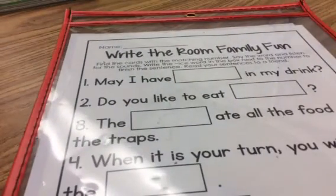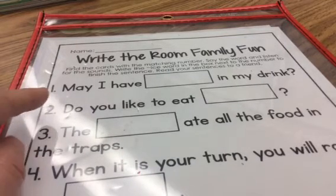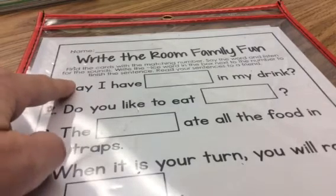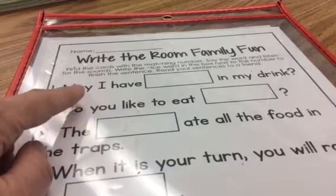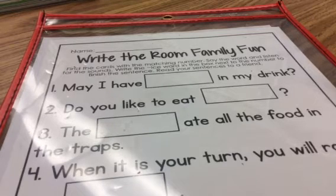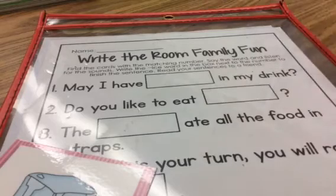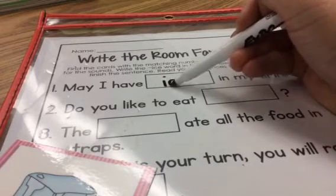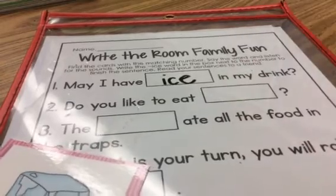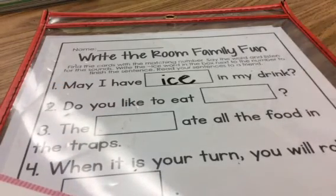Let's turn our paper over and see if we can figure out where these words go in these sentences. Number one — we have a chunk here, the A chunk: M-A. May I have blank in my drink? Well, if you want your drink cold, you probably want ice in your drink. Let's write the word ice. Now read that sentence. Good job.